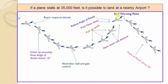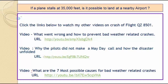This is the point at which the stall warning goes off. Click the links below to watch related videos on the crash of flight QZ 8501: what went wrong and how to prevent bad weather related crashes, why the pilot did not make a mayday call and how the disaster unfolded, and the seven most possible causes for bad weather related crashes.